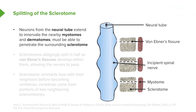Recall that the sclerotome has migrated around the neural tube and created a loose model of the vertebrae. Outside of the sclerotome, we have the myotome to form muscle and the dermatome to form the dermis of the skin. We need to get nerves to and from the dermatome and myotome, but for that to happen, nerves have to pierce the sclerotome, which is pretty tough. So nerves reach it in a relatively unique way.